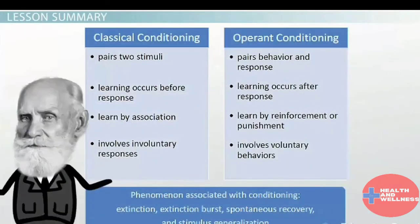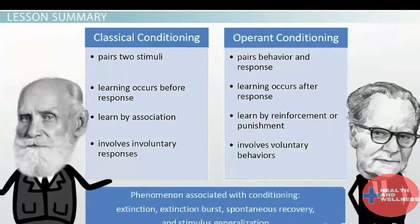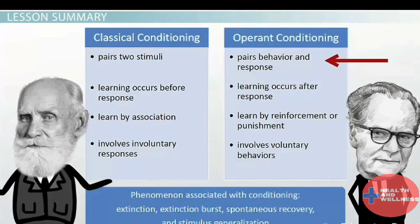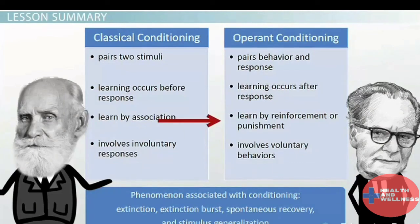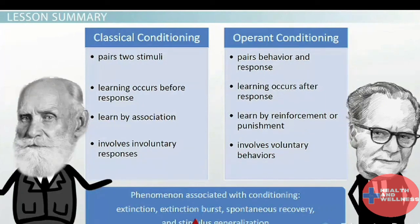In review, let's compare Pavlov's classical conditioning and Skinner's operant conditioning. Both are processes that lead to learning. Classical conditioning pairs two stimuli, while operant conditioning pairs behavior and response. Learning occurs before the response in classical conditioning and after the response in operant conditioning. You learn by association in classical conditioning and by reinforcement or punishment in operant conditioning. Classical conditioning always works with involuntary responses, while operant conditioning works with voluntary behaviors. Extinction, extinction burst, spontaneous recovery, and stimulus generalization are different phenomena that can occur in both.